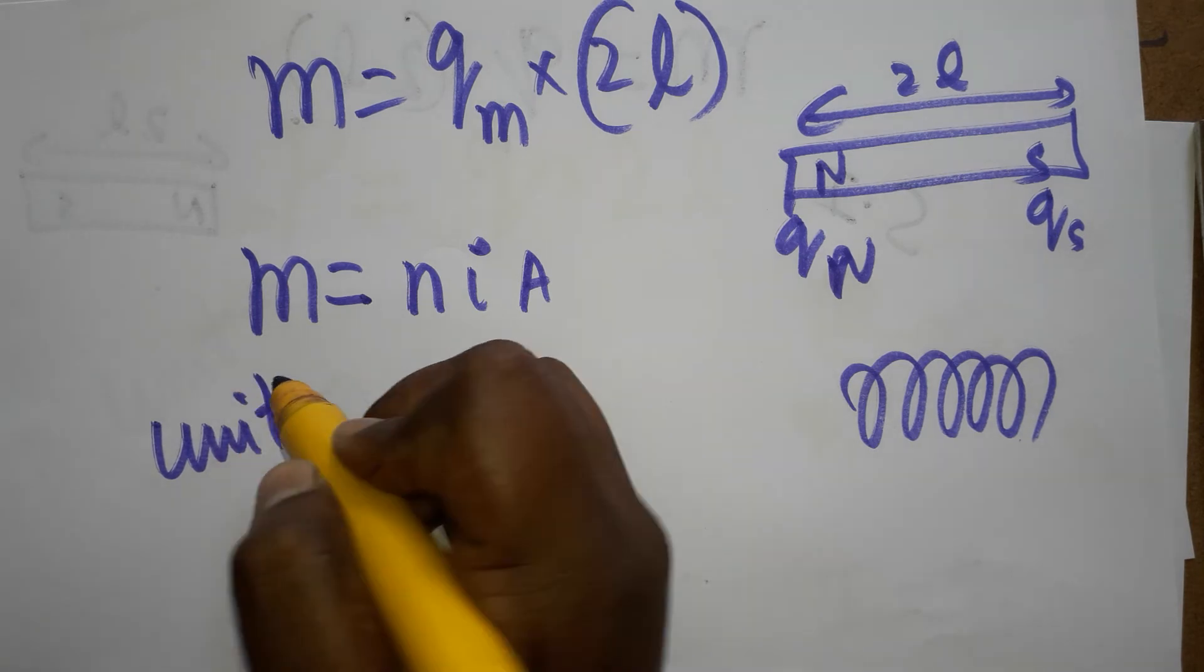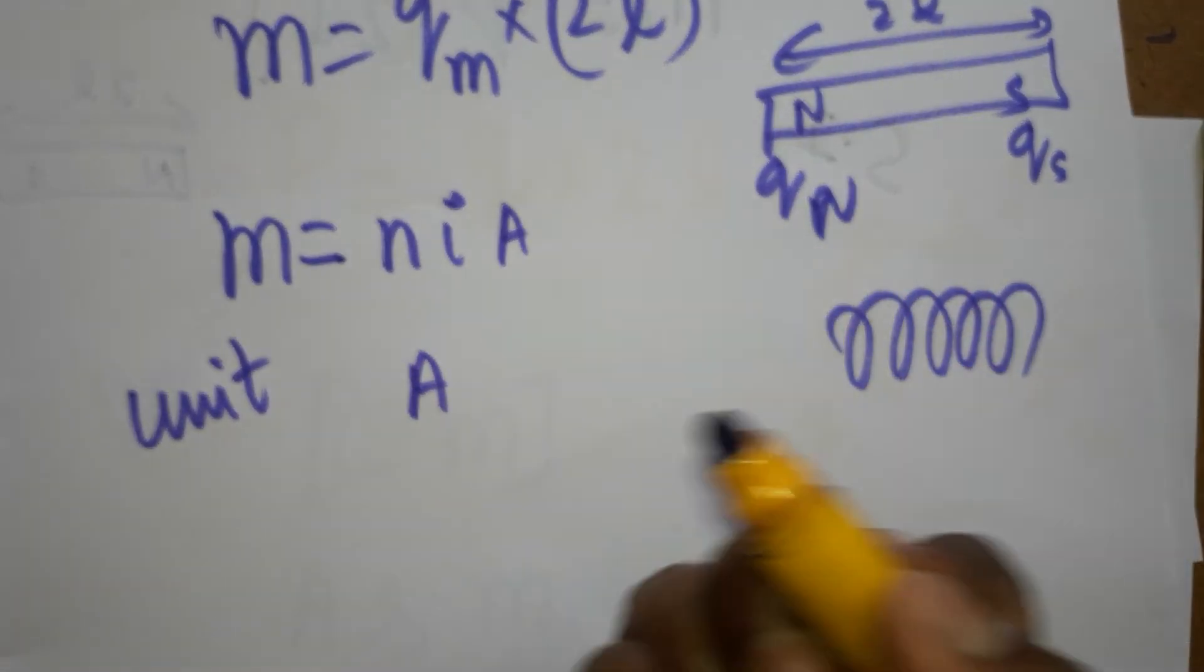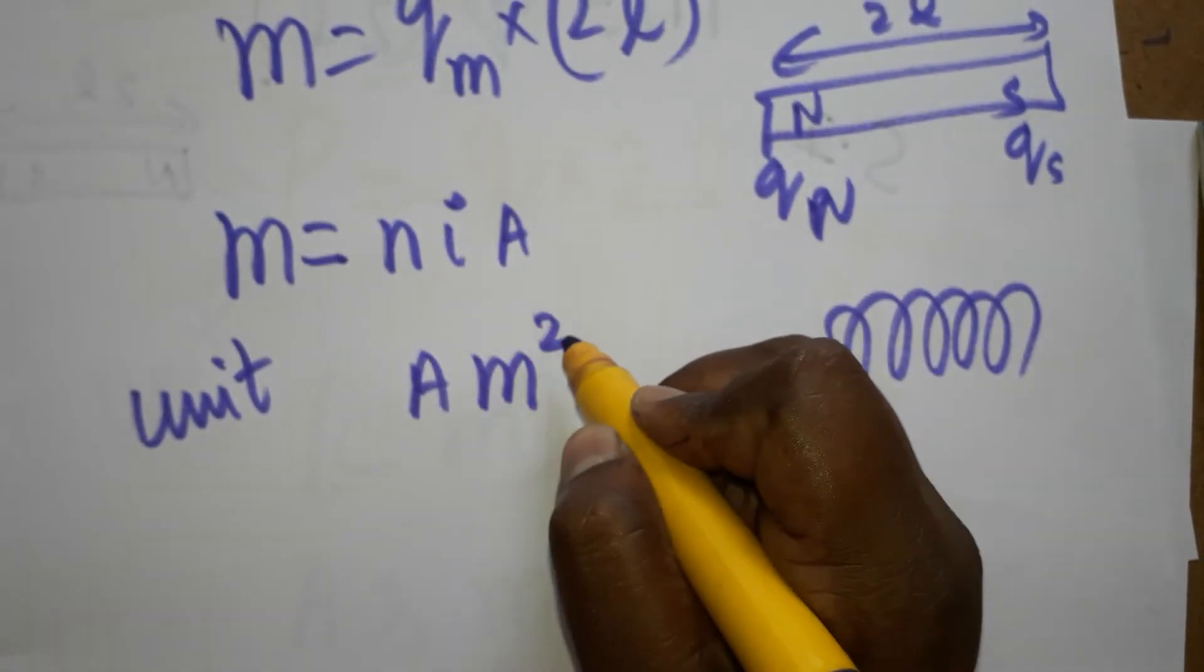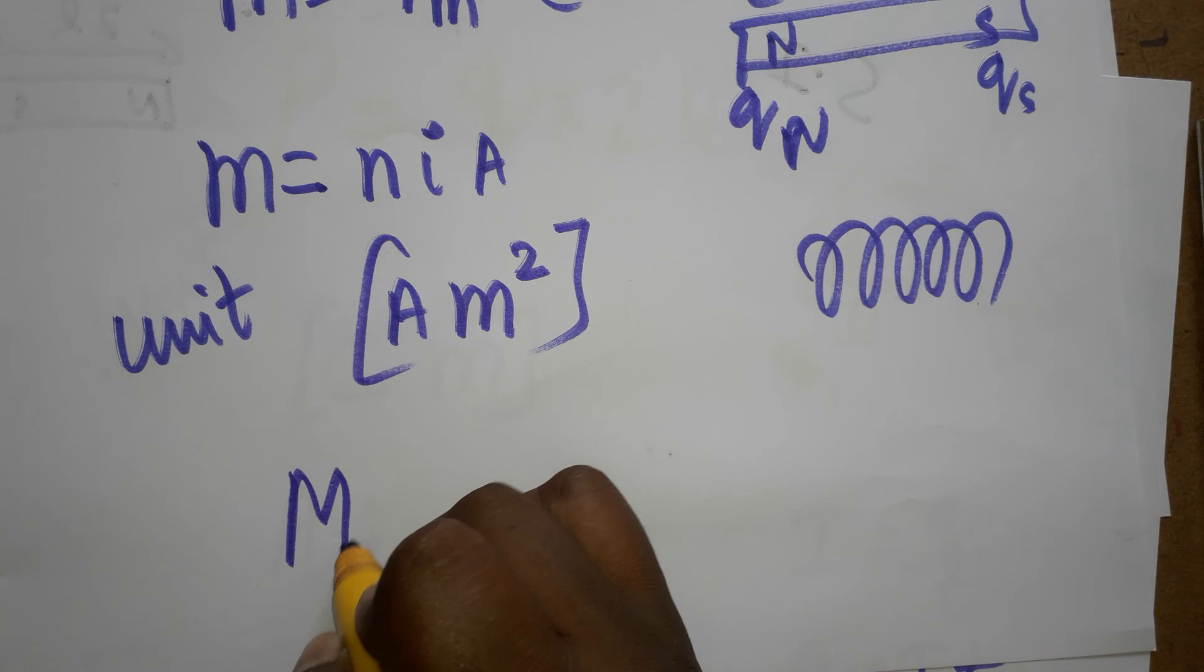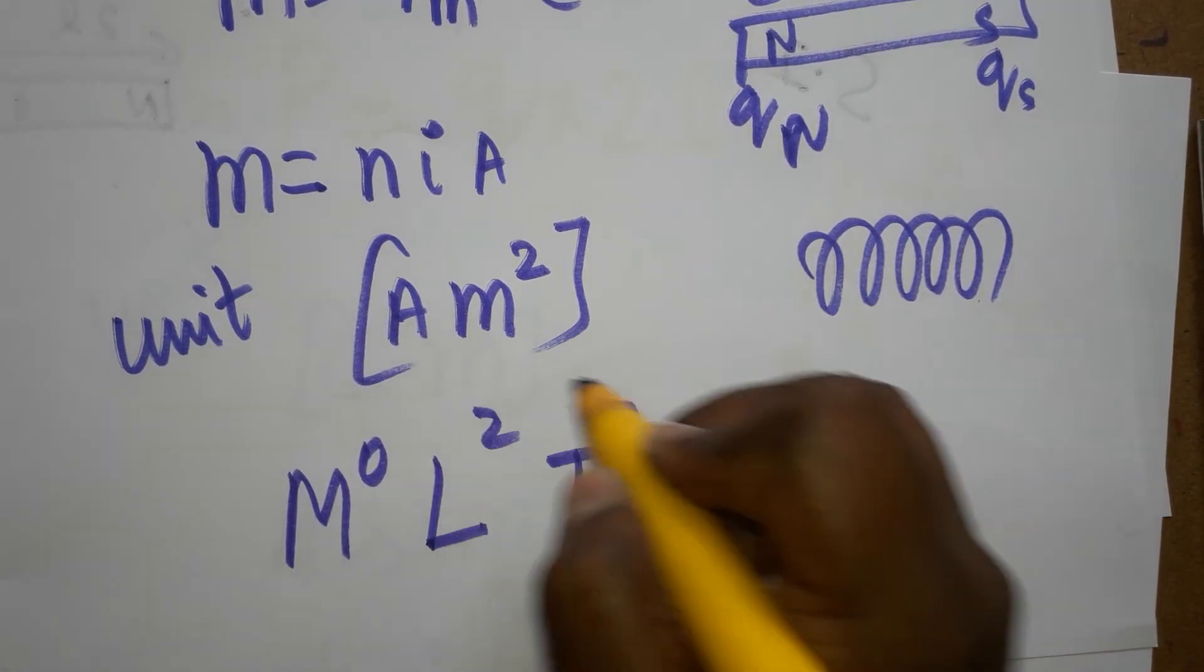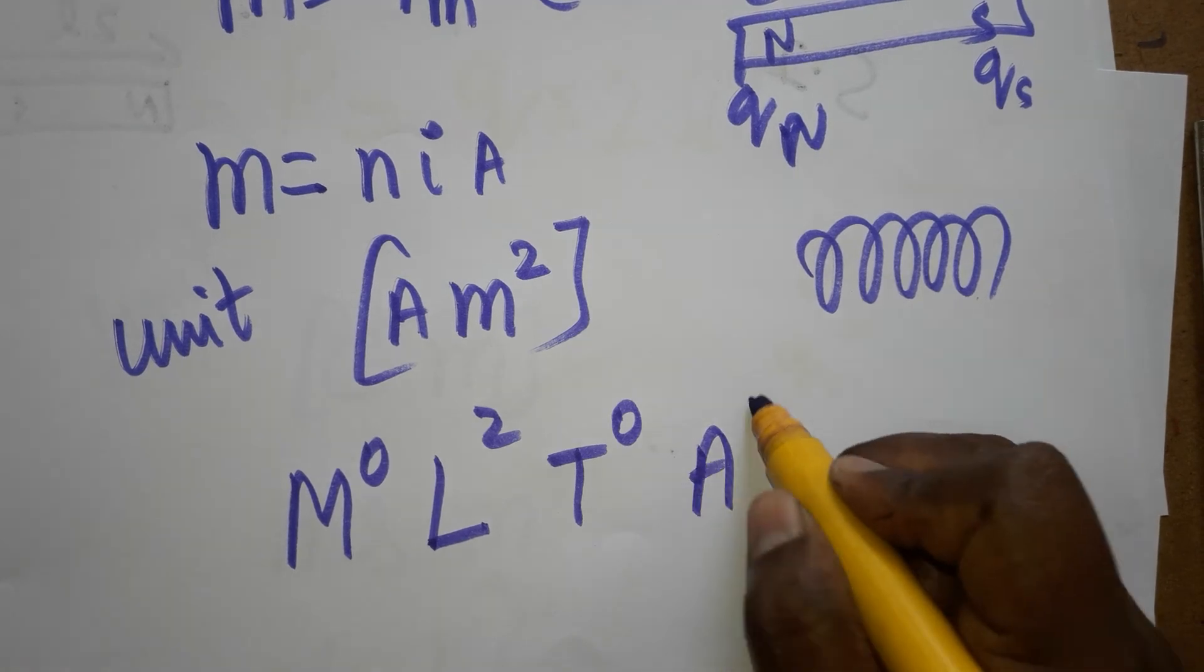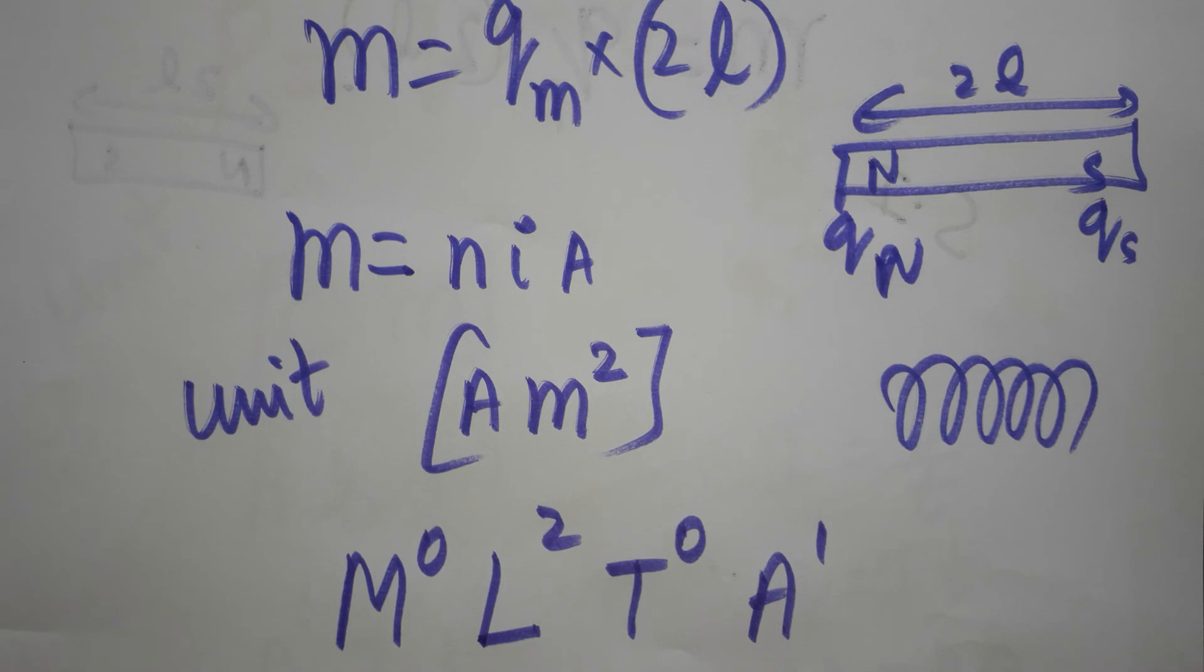Now the unit. Unit of magnetic dipole moment: current is ampere, area is pi R square or length into breadth, which is meter square. Now the dimensional formula: mass is not there, 0; length is square; time is not there, 0; and ampere is there, A power 1. Thank you for watching my channel. If you like my channel, please subscribe. Thank you.